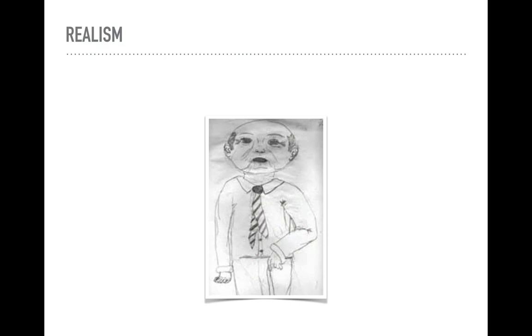The fourth stage is the realism stage. This usually develops around ages nine to ten years old. Overlapping and a sense of spatial relationships becomes more evident. Children become more concerned with details and realistic representation of objects.